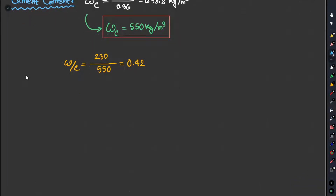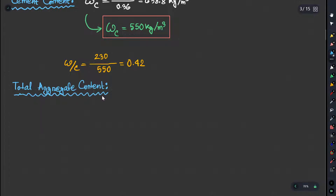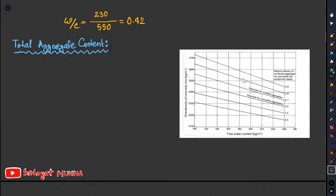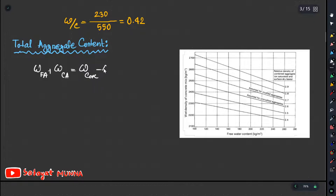The next step is to find the total aggregate content. That means the fine aggregate and coarse aggregate combined. From the chart, the total aggregate content is determined, and it equals fine aggregate plus coarse aggregate.